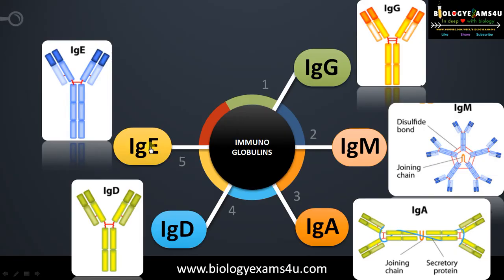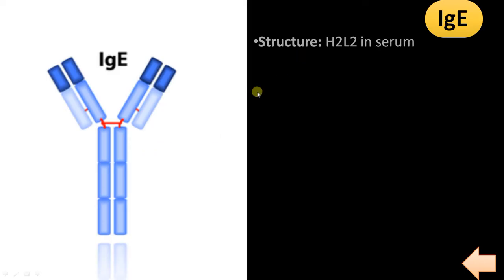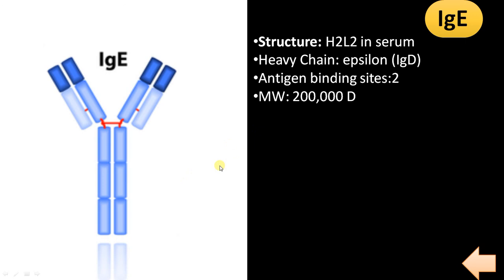The final one is IgE. The structure is H2L2. Heavy chain is epsilon, and there are two antigen binding sites. Molecular weight is 200,000 dalton. It is one of the least abundant antibodies. Its Fc region can bind to mast cells and basophils.